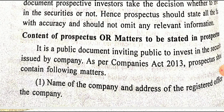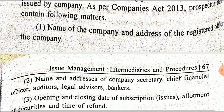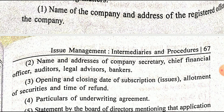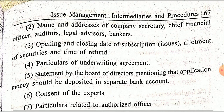As per the Companies Act 2013, the following matters should be included as content of the prospectus: name and address of the company, address of the registered office, name and address of the company secretary, chief financial officer (CFO), auditors, legal advisor, and bankers. Also included are the opening and closing date of subscription, the date of allotment, application money, first call, and second call.